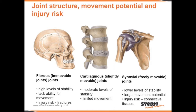Synovial joints, such as those found in the shoulder, hips and knees, have lower levels of stability. This is due to their large movement potential, which increases the injury risk, particularly to the connective tissues such as the ligaments and the tendons.